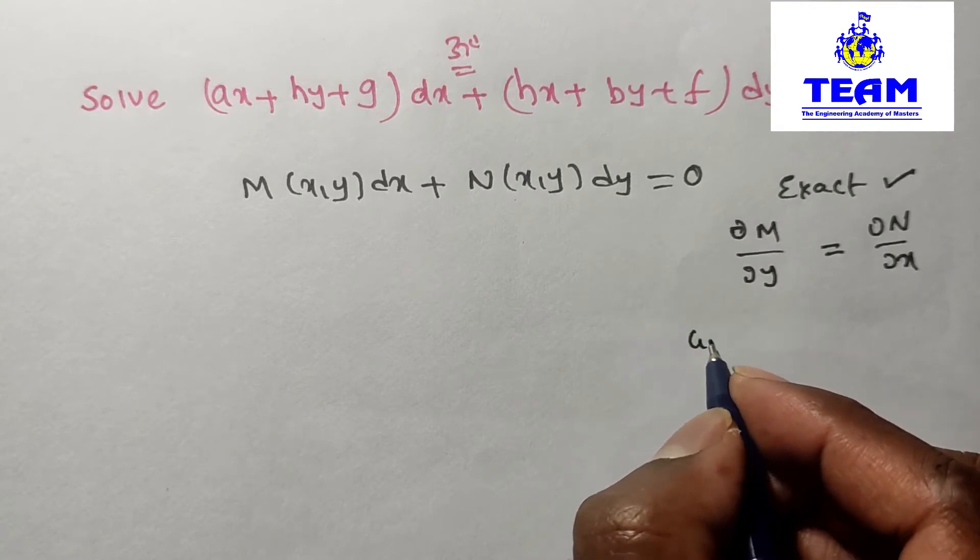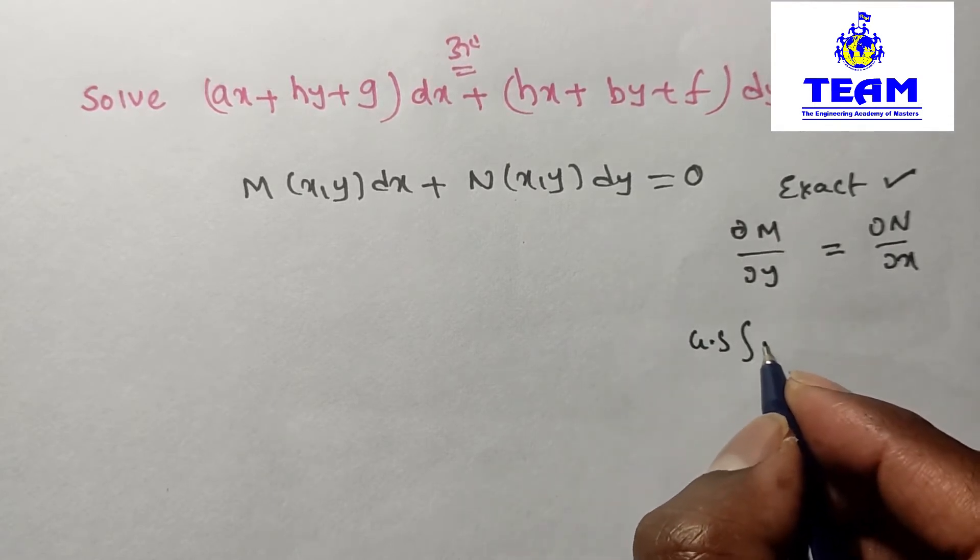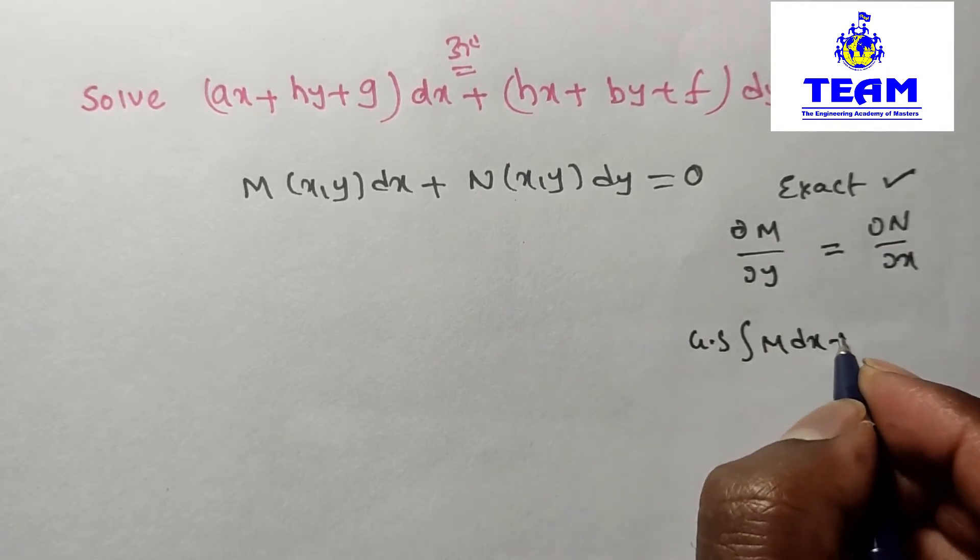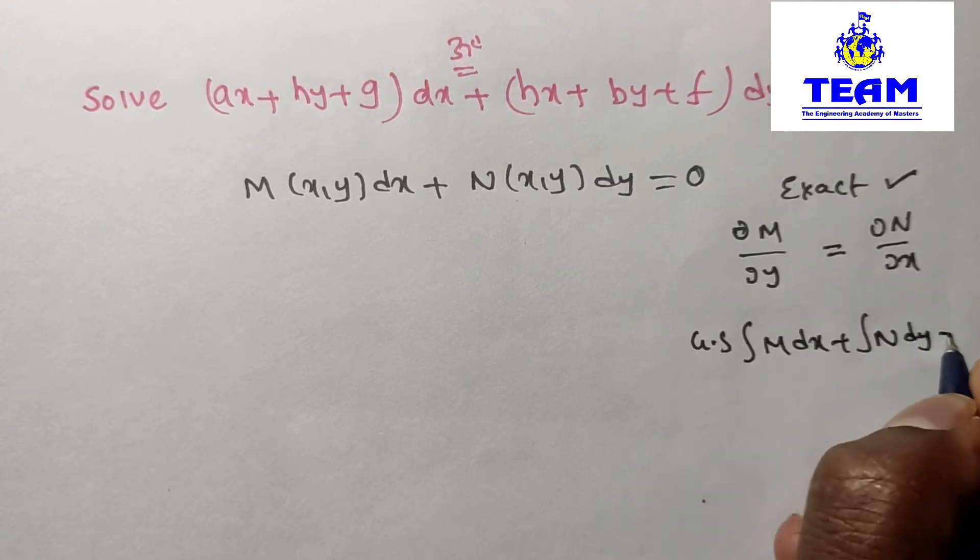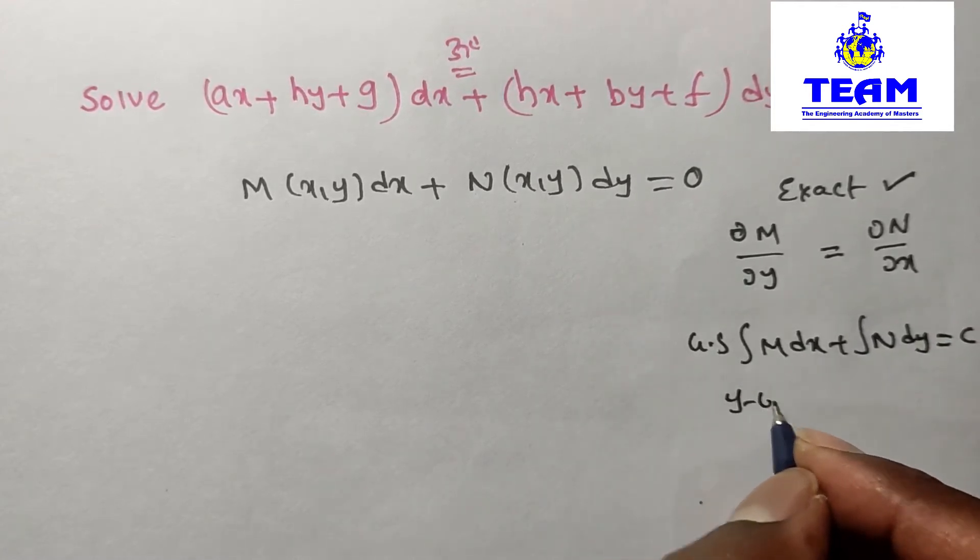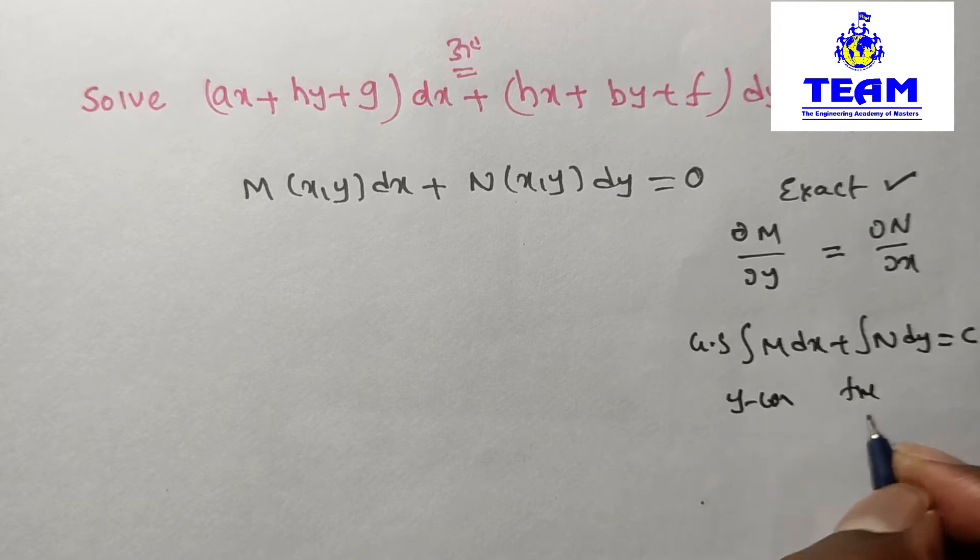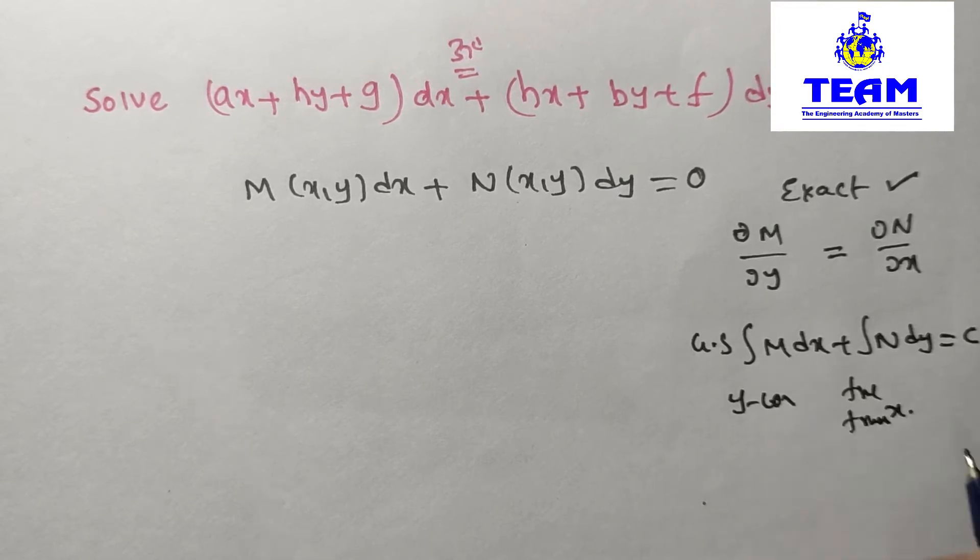If it is exact, we have a general solution directly: integral of M dx plus integral of N dy equals C, where y is constant and this is free from x terms.